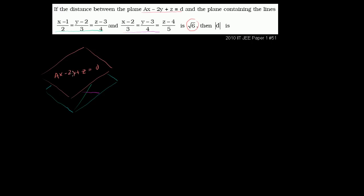A good starting point is to figure out the equation for this blue plane. Since the planes are parallel, the equation should look very similar to the orange equation, at least on the left-hand side, possibly with a different d value. Once we find the equation for this plane, we can figure out what a is. We'll find two vectors on the blue plane, take their cross product to get a normal, then use that to find the plane's equation.